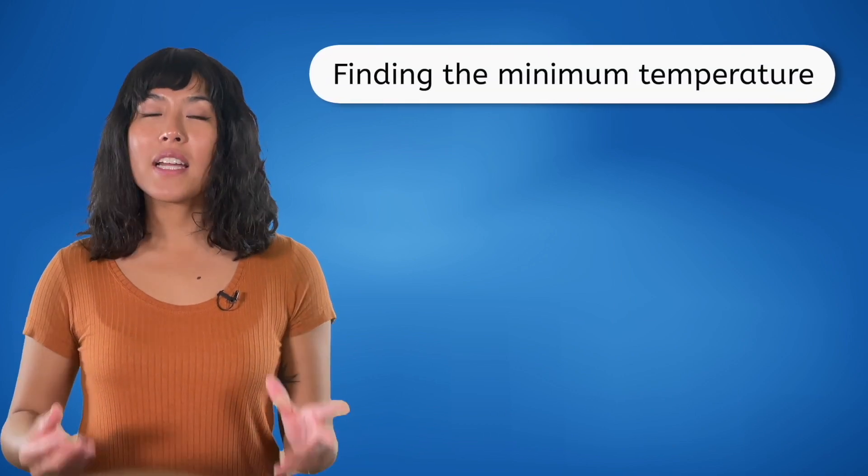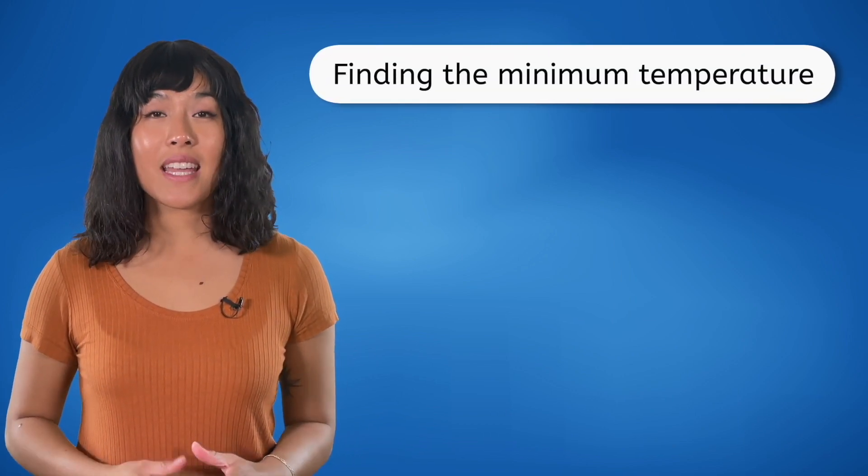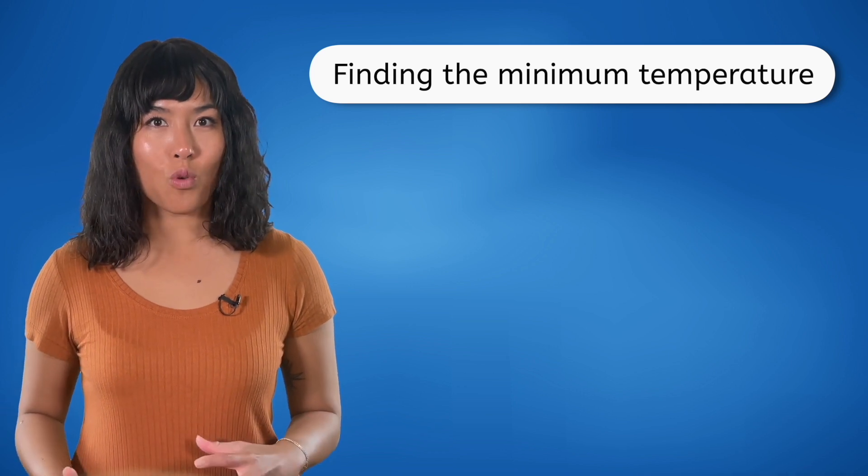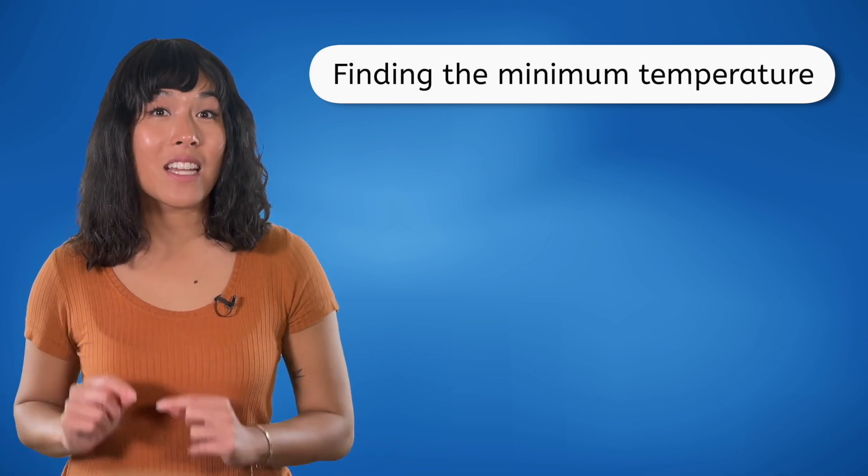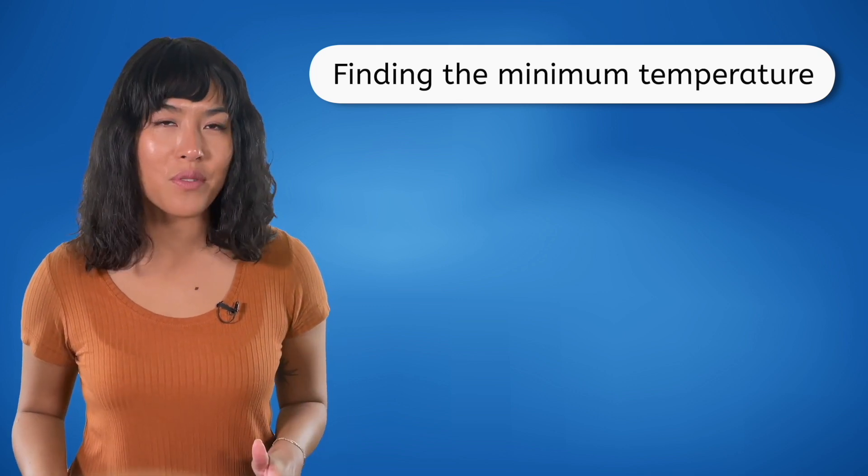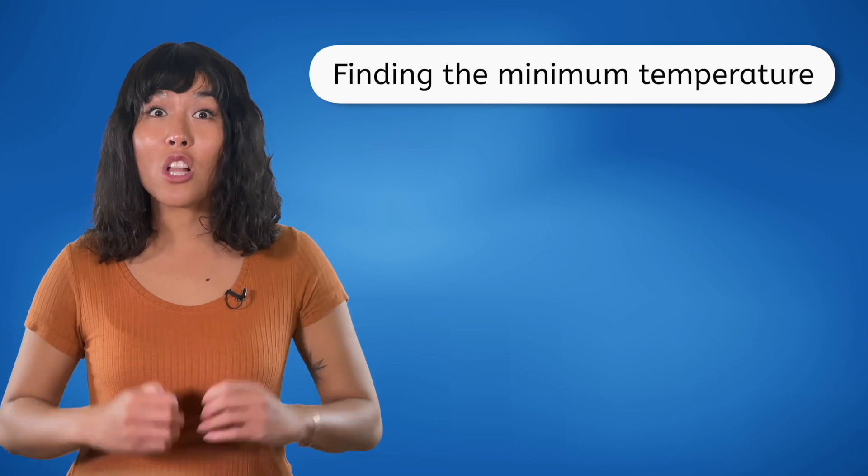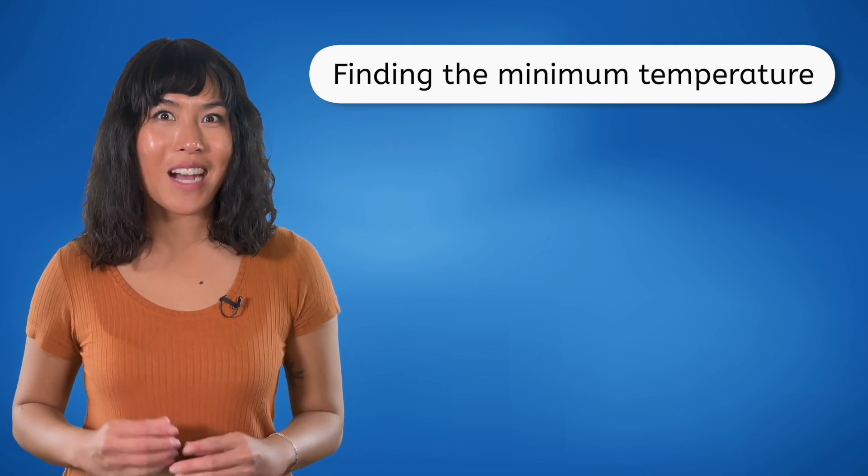Next, let's find the lowest temperature. What changes do you think we would make in the original program in order to display this? Here's a hint. Instead of initializing max temperature to a really small number like negative 1000, we should now use a large number like 1000. Give it a try in your guided notes.